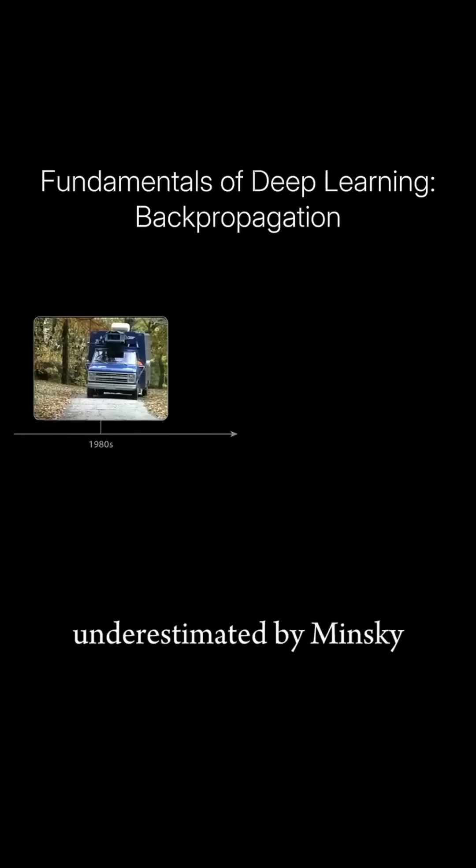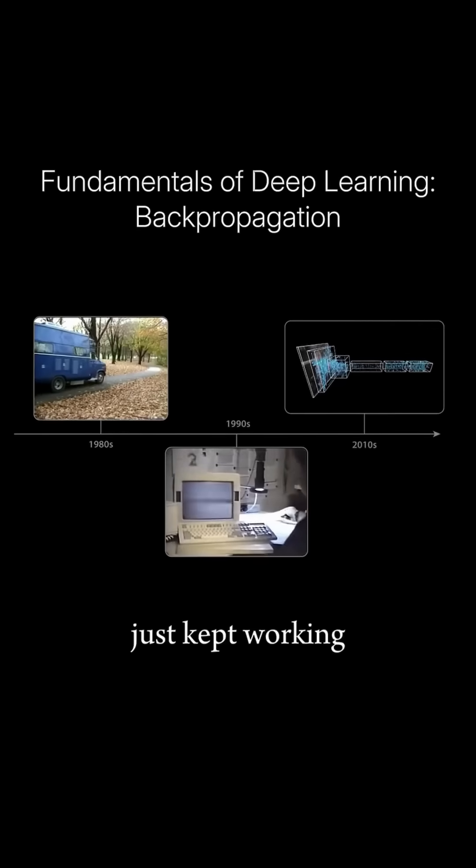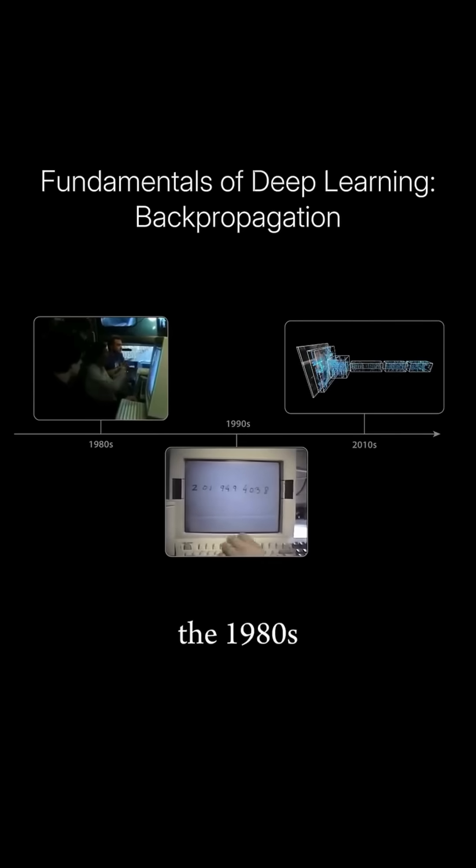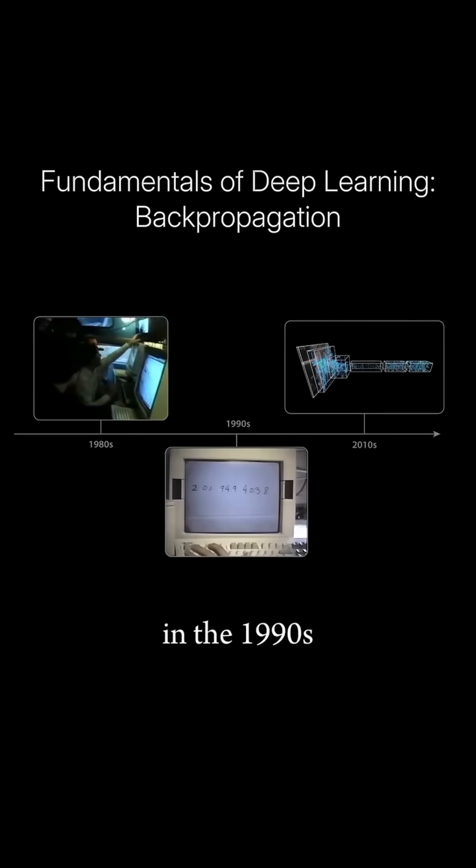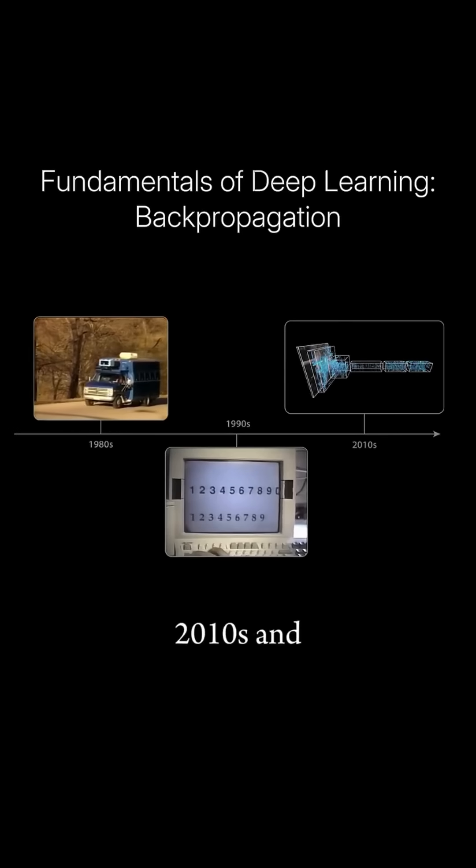However, despite being consistently underestimated by Minsky and many others, backpropagation just kept working, successfully training models to drive cars in the 1980s, recognize handwritten digits in the 1990s, and classify images with incredible accuracy in the early 2010s.